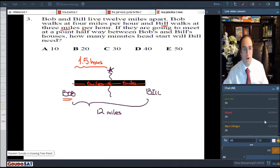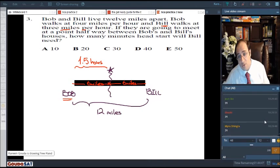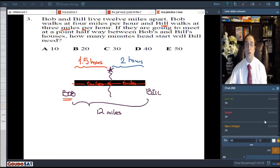Bill walks at 3 miles per hour. So, every hour he walks 3 miles. So, how much time will it take him to walk 6 miles? It will take him 2 hours, right? Because in the first hour, he'll walk 3. In the second hour, he'll walk another 3 miles. So, 2 hours.